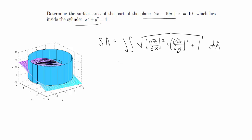Using the equation of the plane, we can solve for z. So z equals 10 minus 2x plus 10y. Then we can plug that into the equation. So it's going to be partial z partial x. That will be negative 2 squared plus 10 squared plus 1 dA.